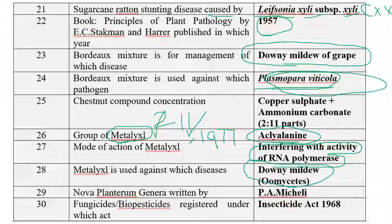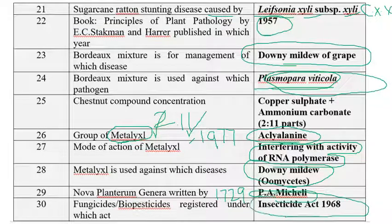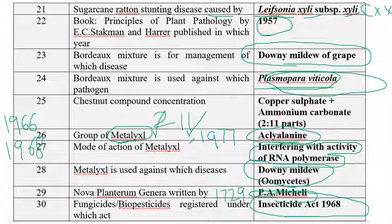Nova Plantarum Genera was written by P.A. Micheli, published in 1729. Fungicides and biopesticides are registered under the Insecticide Act 1968, whereas the Seed Act is 1966. Seed Rules is 1968 and Insecticide Rules is 1971. Don't get confused: Seed Act 1966, Insecticide Act 1968, Seed Rules 1968, Insecticide Rules 1971.